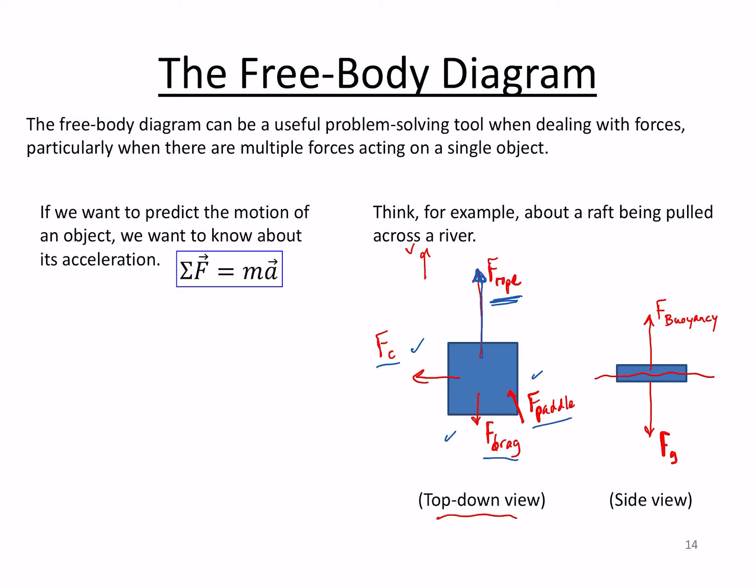The other thing that we want to be careful of is that we don't want to think about the forces that the raft is causing on other things, right? The raft is pushing down on the water, right? So if we were drawing a free body diagram of the water around the raft, then maybe we would include that force, but we're not. We're looking at a free body diagram of the raft itself. In addition, whoever is pulling on this rope, due to the third law, is also going to be experiencing an equal and opposite force that is the same as that rope force. But of course we don't draw that in this diagram, right? Because by definition of the third law, that force is acting on a different object. In this case, whoever it is that's, or whatever mechanism, is pulling on the rope and pulling the raft across the river.